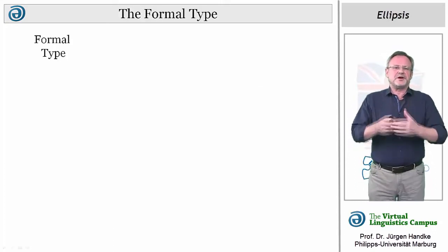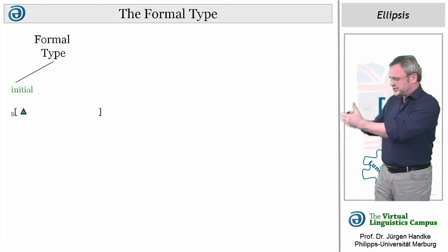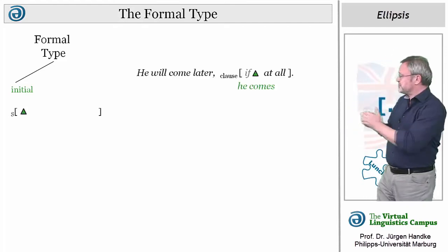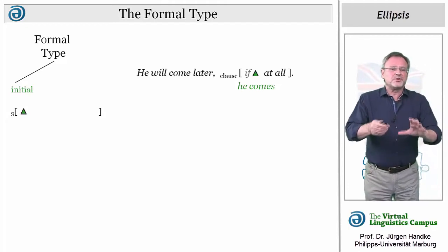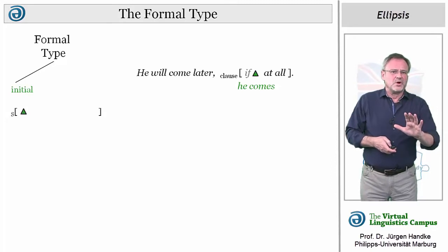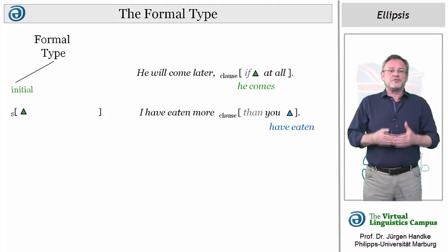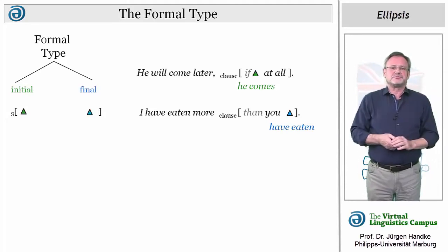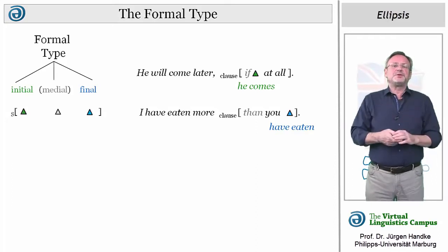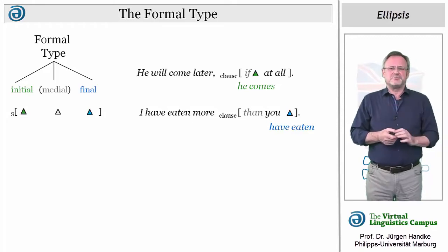Formally speaking, we can define three main categories. Clause initial ellipsis, as in 'He will come later, if at all,' where we can ignore the conjunction 'if' because of its peripheral character. Or, in 'I have eaten more than you,' we have a case of clause final ellipsis. There is also a case of medial ellipsis, but if we take a closer look, it is often the case of either initial or final ellipsis.